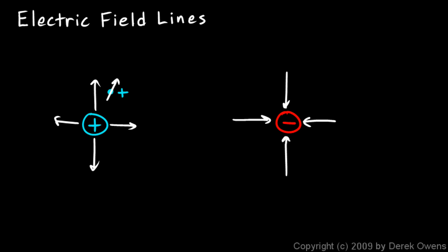A proton would be attracted toward a negative charge, so the direction of the field is inward toward a negative charge. The direction of the field is defined as the direction of the force that that field would exert on a little positive test charge. So it's defined in terms of a positive charge.